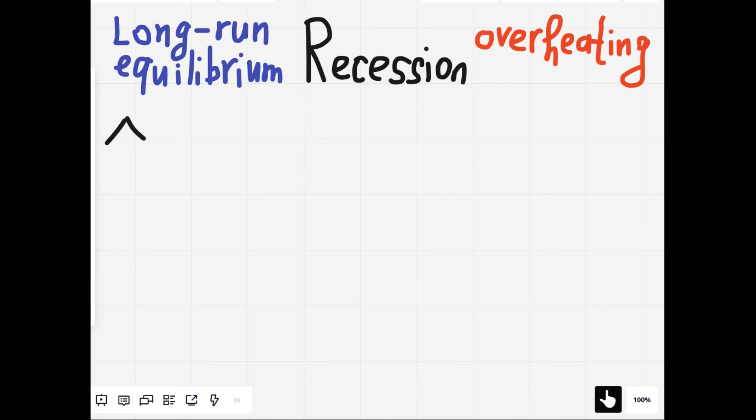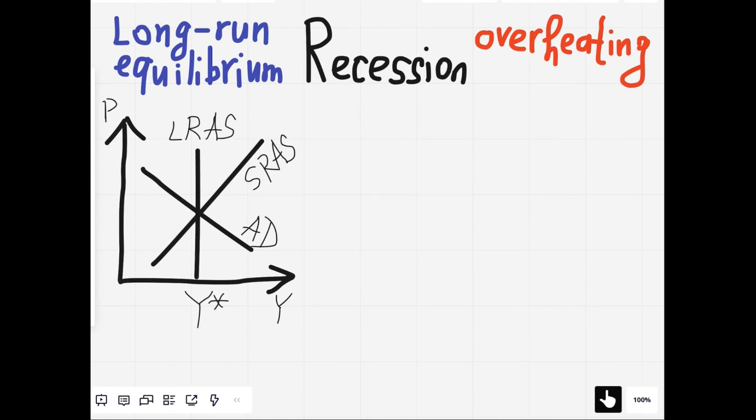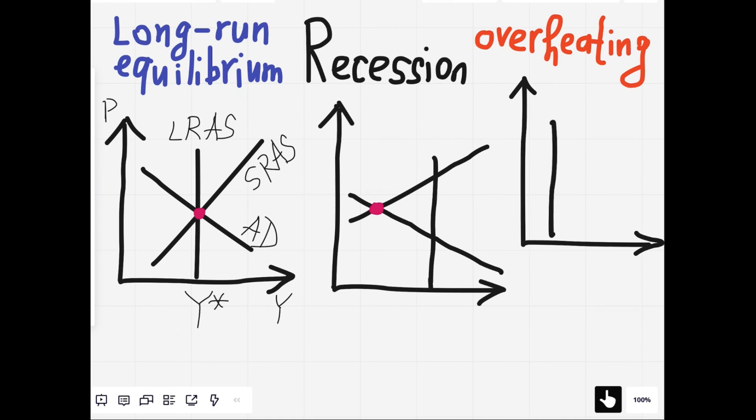You are a student, which means that you will have a test. And that test will have a problem on the ADAS model. And that problem will describe an economy. And that economy will be one out of three possible situations. That economy will be either in the long-run equilibrium, or in a recession, or the economy is overheating. If the economy is in the long-run equilibrium, you draw this. If the economy is in a recession, you draw it on the left of the potential output. And if the economy is overheating, you draw it on the right of the potential output. Three economies, three graphs. And that is how you start solving problems on the ADAS model.